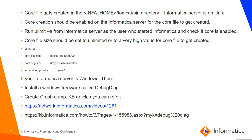If your Informatica server is installed on any Unix machine, there will be a core file which gets generated for the mapping crash. The core file gets generated under the Tomcat bin directory on the Informatica server. Core creation should be enabled on the Informatica server so that you can get a core dump created. You can run 'ulimit -a' from the Informatica server by logging in as the user who started Informatica services and check if the core creation is enabled. The core file size should be set to unlimited or to a very high value for the core file to get created.